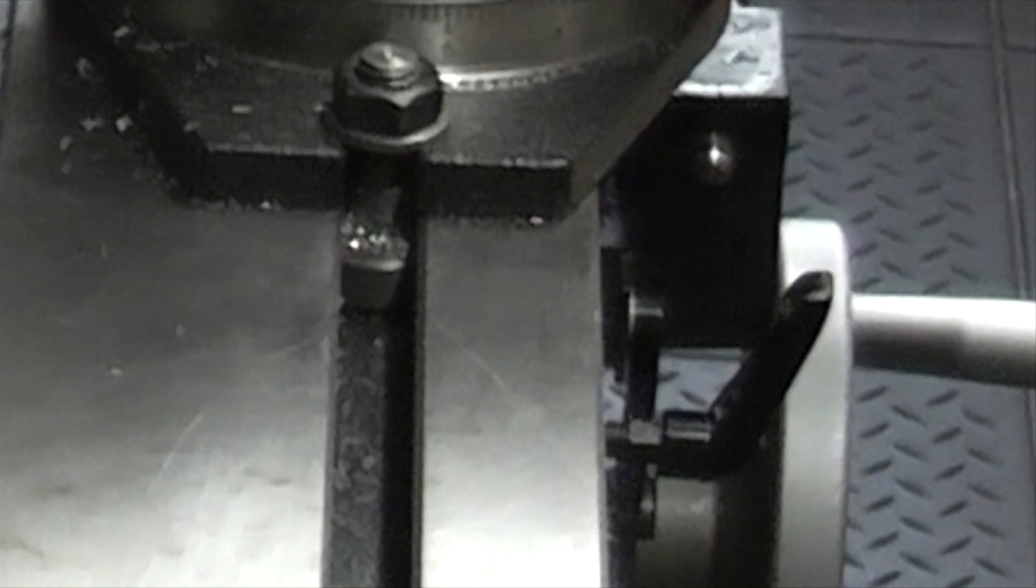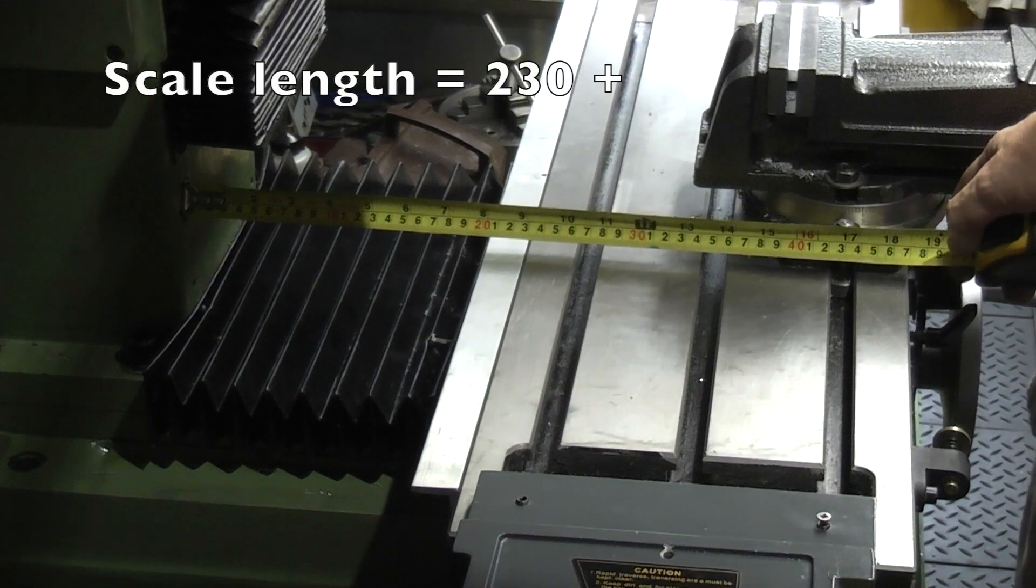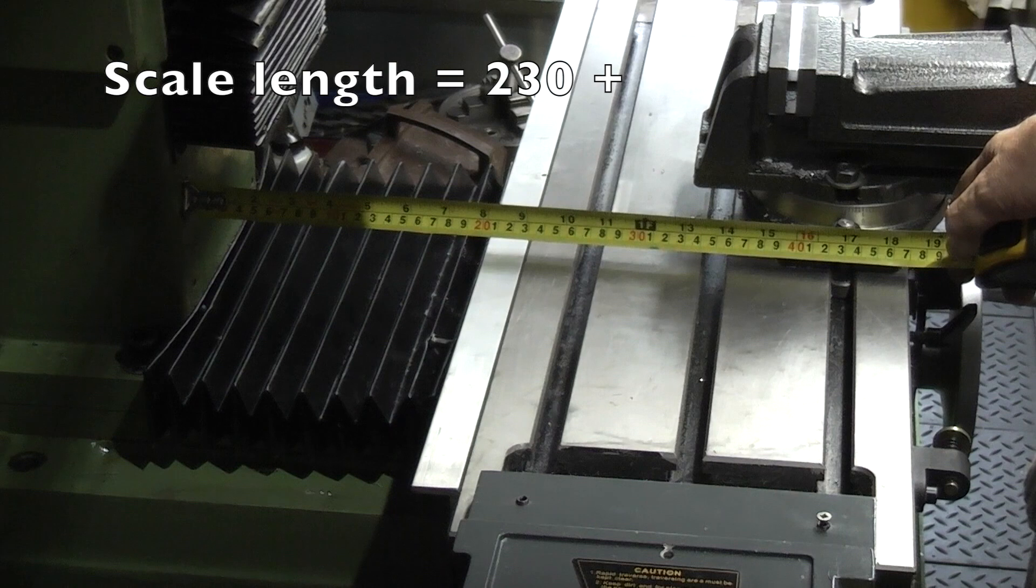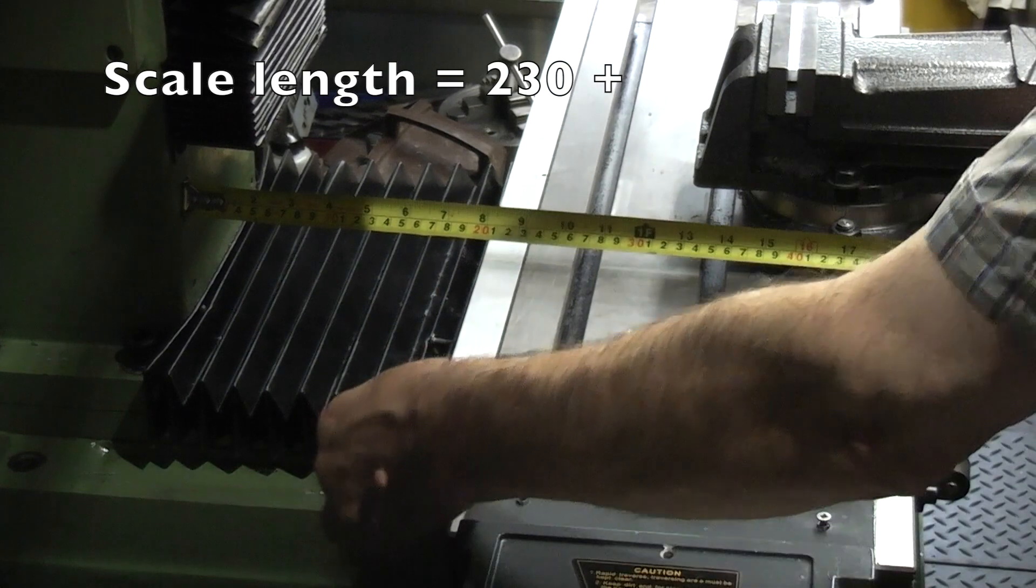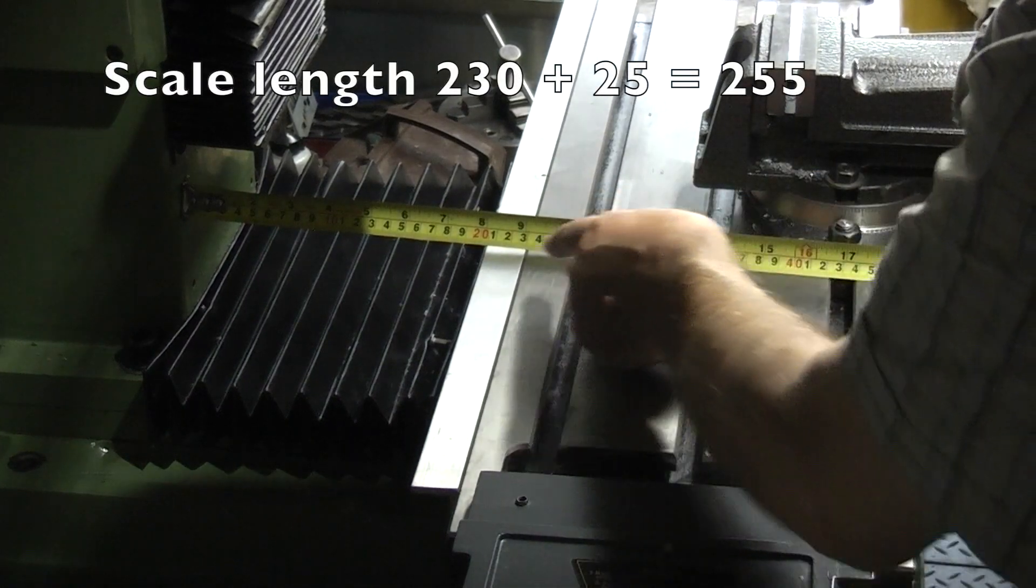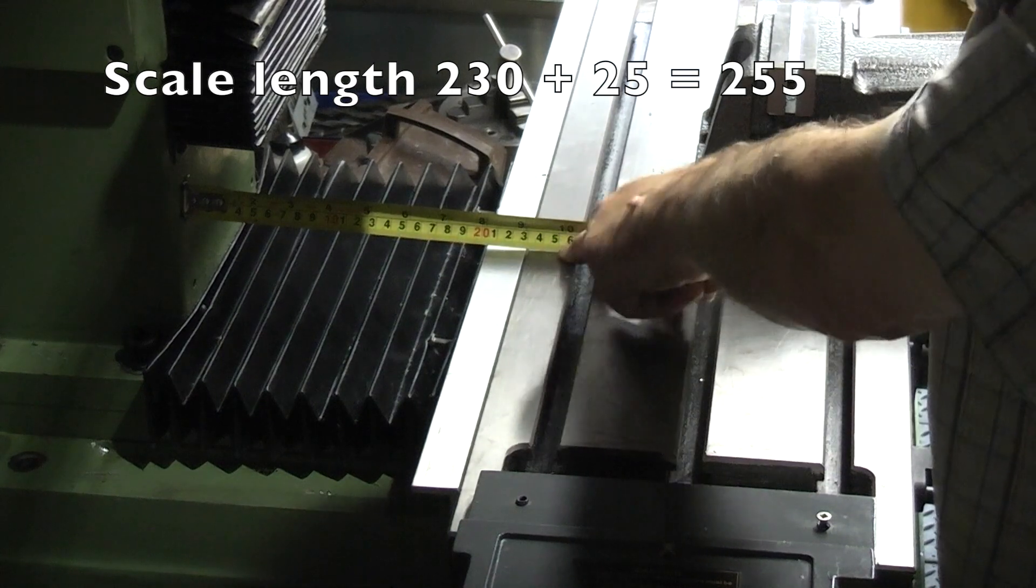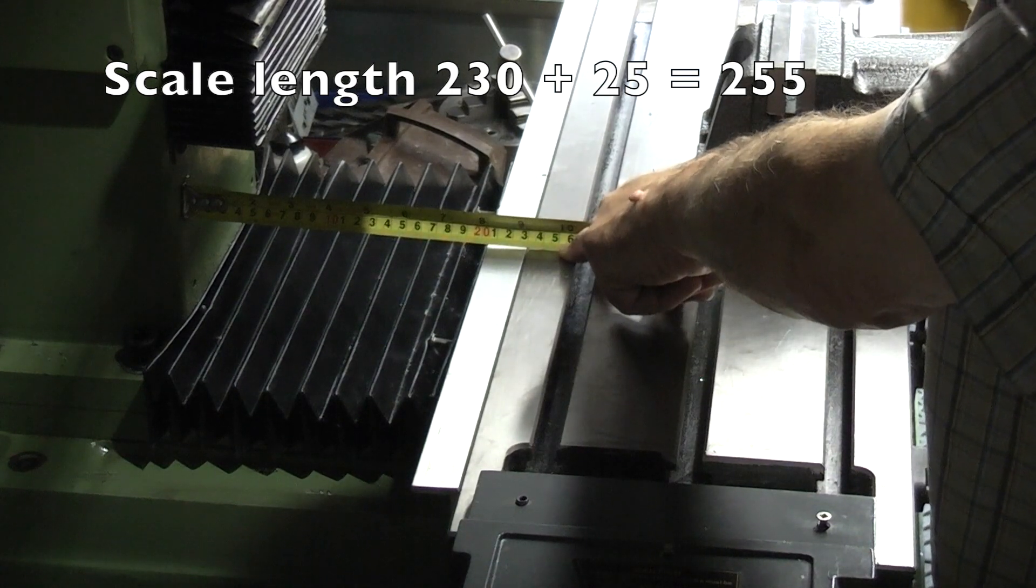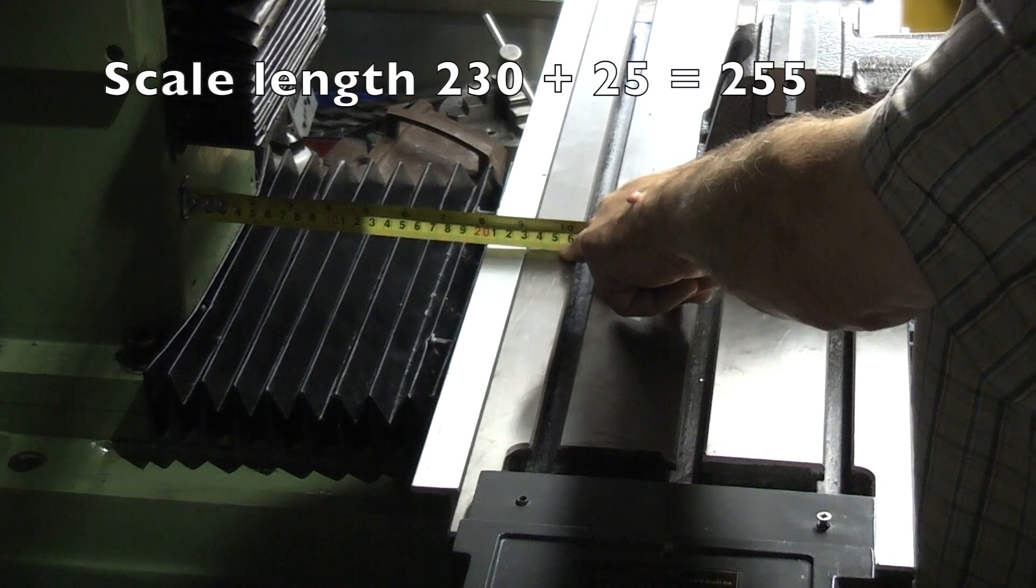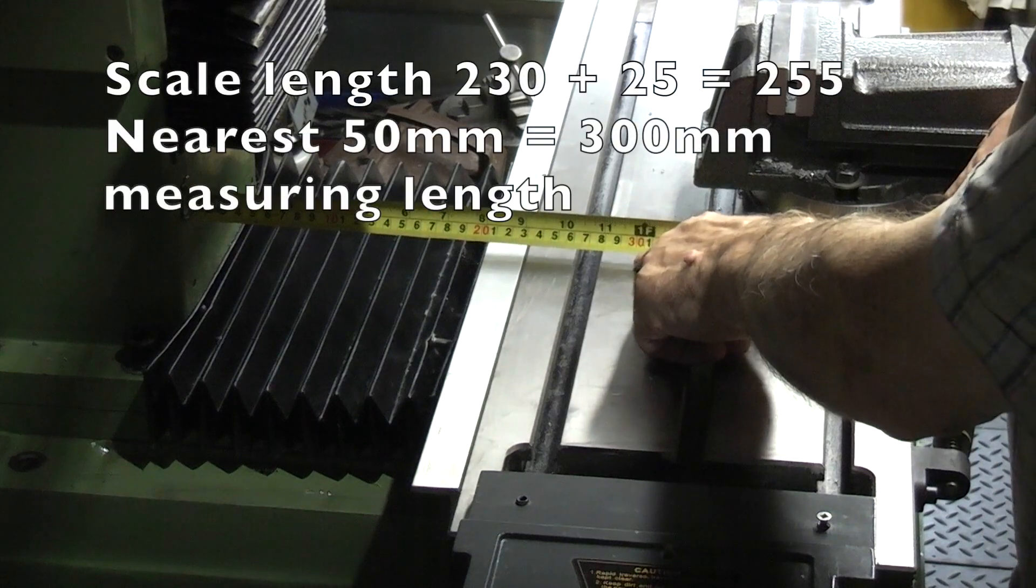Now I know I can take that off and get this face of the table to come up to the wheel. So when I wind out and this touches the wheel I know I have at least 25mm travel there. So I want to add 25mm onto my scale. The length of travel is 230mm plus the inch on the end, 255mm. So I'm just over the 250mm. So I wouldn't buy a 250mm scale because I've got the chance of hitting the end of the scale and not getting the full length. So I'd go up to the nearest 50mm which is 300mm.